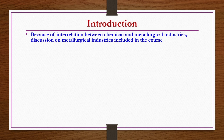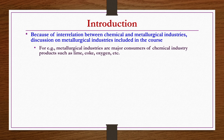With this background, we start the introduction about metallurgical industries. Because of the interrelation between chemical and metallurgical industries, discussion on metallurgical industries is included in this course. For example, metallurgical industries are major consumers of chemical industry products such as lime, coke, and oxygen. Coke and lime are used in making pig iron and steel; oxygen is used in most industrial processes.